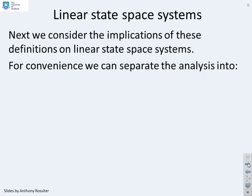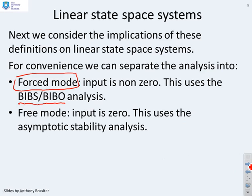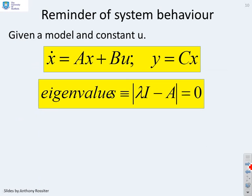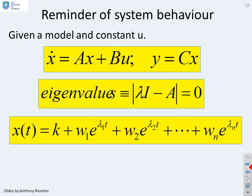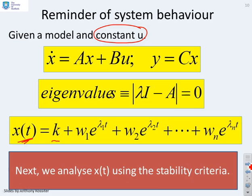Now we want to look at these definitions and apply them to state-space models. We're going to separate into two different types of behaviour: forced behaviour, when the input is non-zero, for which it's appropriate to use a BIBS or BIBO analysis; and free mode, where the input is zero, for which it's more appropriate to use an asymptotic stability analysis. If you find the eigenvalues of the matrix A and put them in lambda, then for a constant u the behaviour x of t takes a form with a constant associated with u and modes associated to each eigenvalue.